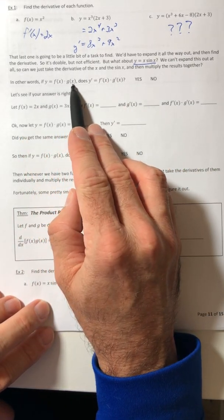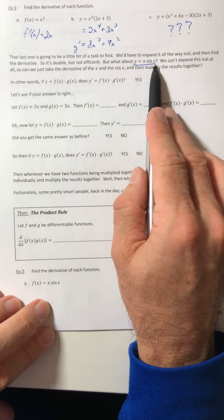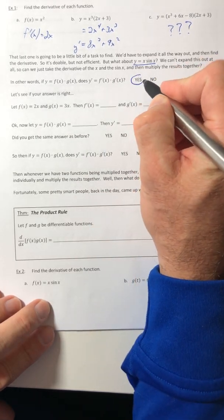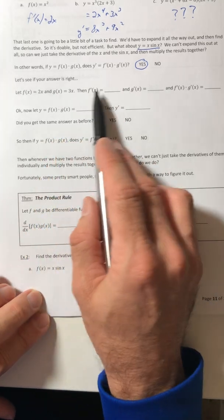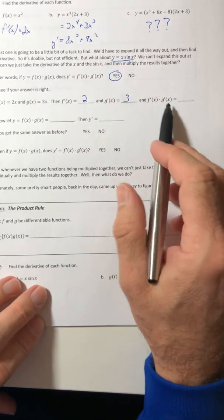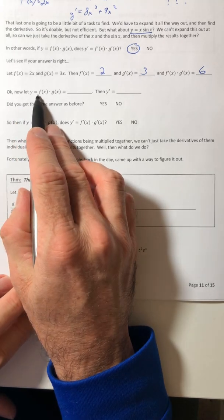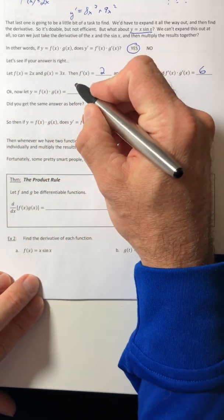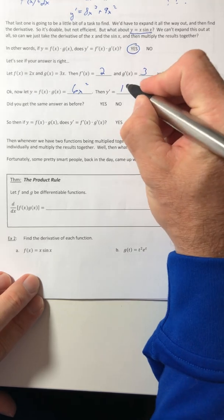So we're going to let y equal f of x times g of x. So does the derivative equal just f prime times g prime? So in other words, like with x sin of x, can I take the derivative of x and multiply it by the derivative of sine? So let's just for fun, let's just say, yes, I can. So let's see if I'm right. So let f of x equal 2x and g of x equal 3x. So the derivative of both of them, f would be 2 and g would be 3. So then if I multiply them together, I get 6. Okay. So now let y equal the product of f and g. So if I multiply them together as they are, that would equal 6x squared.